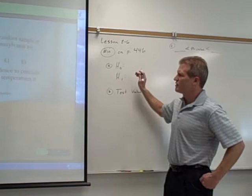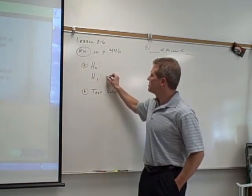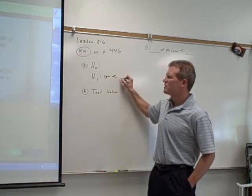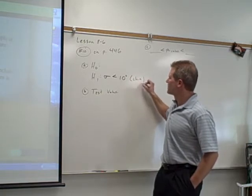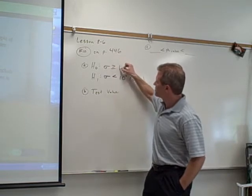So in my alternative, because I want to make sure my alternative has the less than in it, I'm going to say the standard deviation, which is lowercase sigma, is less than 10 degrees. I assume they're doing this in Fahrenheit, and that would be the claim. So the null would be that the standard deviation is greater than or equal to 10 degrees.